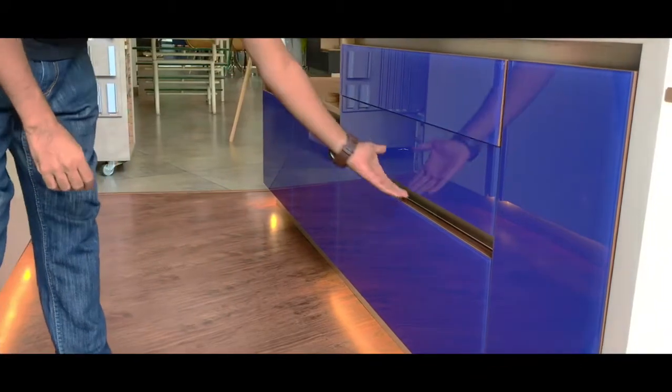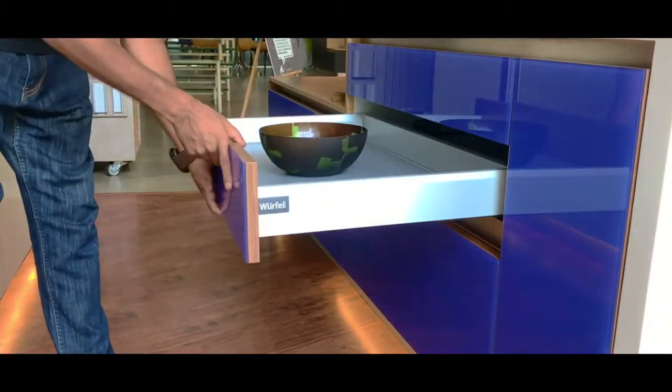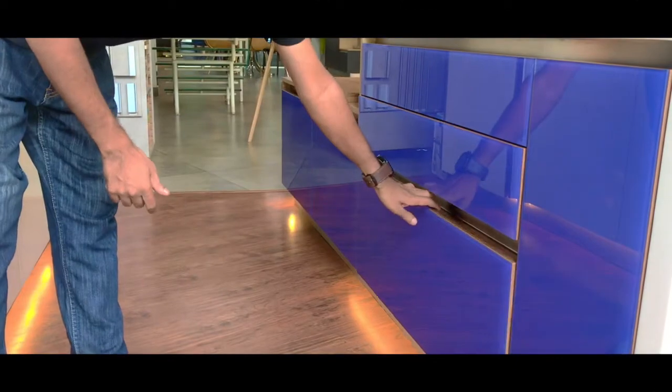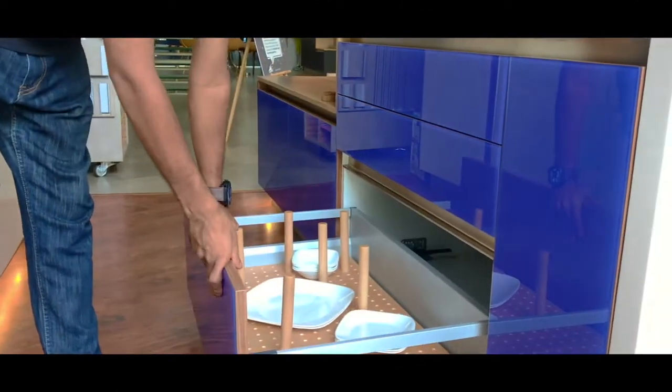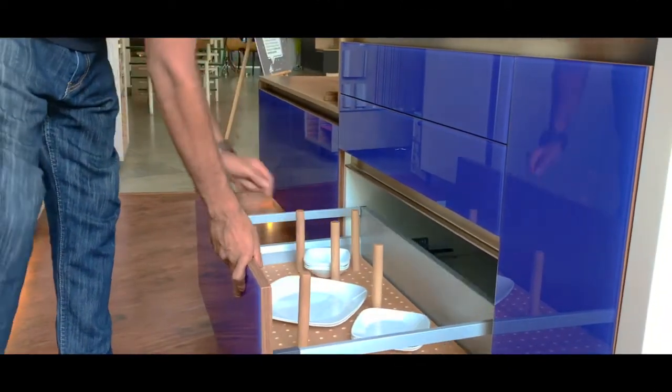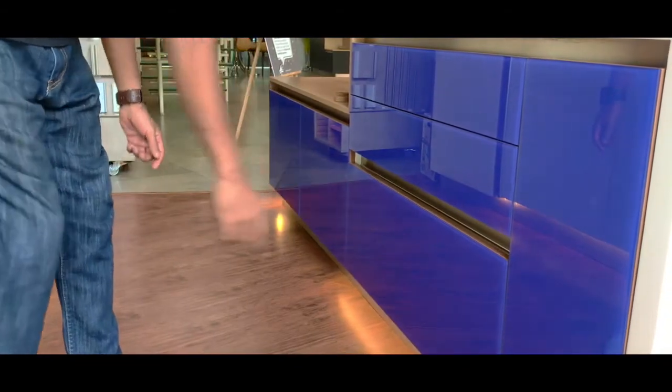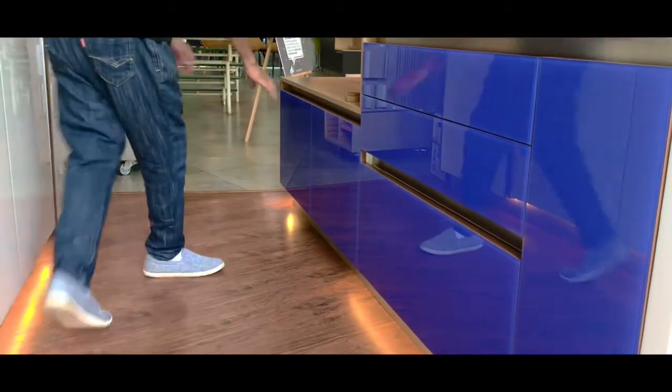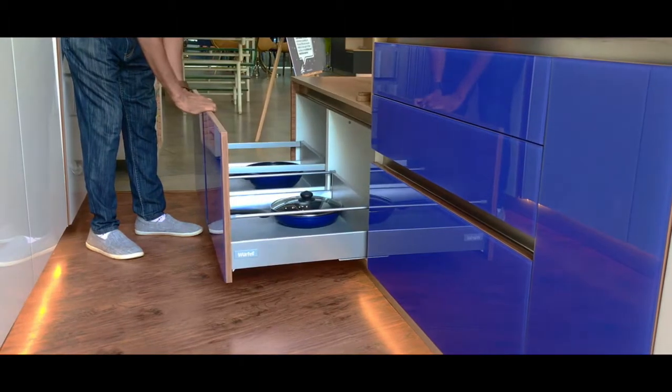Next to that we have a base cabinet with two drawers and a pullout at the bottom, with a plate organizer down at the bottom as well. Next to the hob unit we have two big pullouts which are used to store pots and pans.